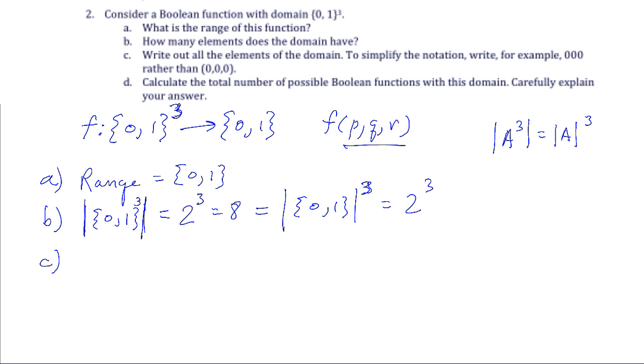Part C says write all the elements of the domain. I'll write it out like this. There are eight of them, and I'll put them in order. This is the binary order: 000, 001, 010, 011, 100, 101, 110, and finally 111. I always double check: one, two, three, four, five, six, seven, eight.